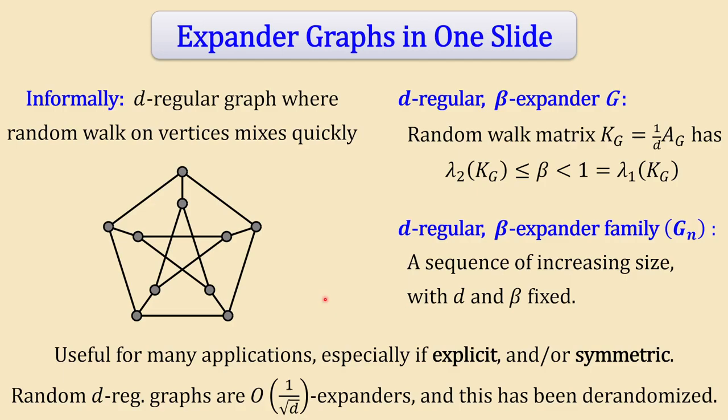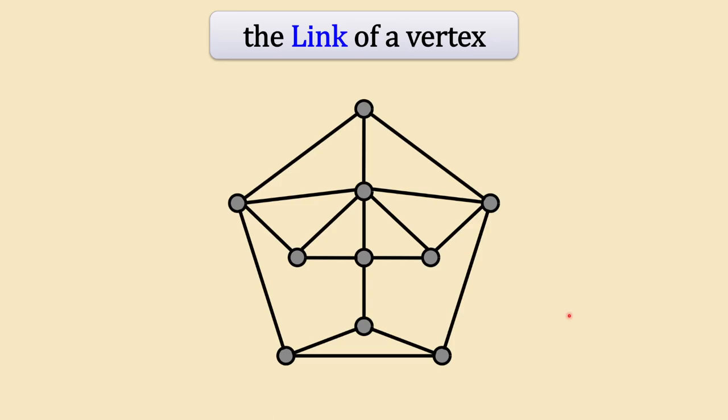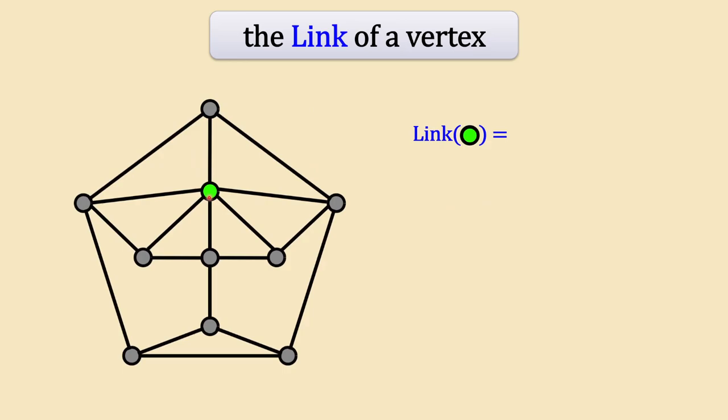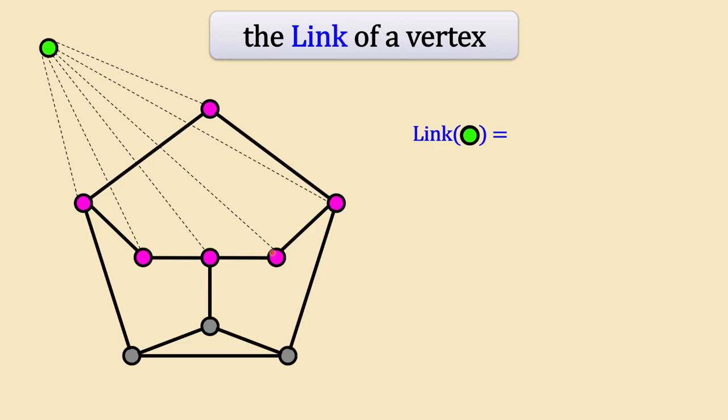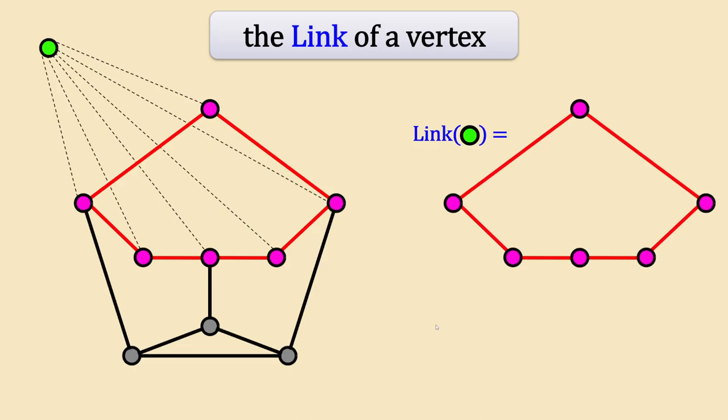To talk about high-dimensional expanders, we need the concept of the link of a vertex. Given a graph, you take a vertex — say a green vertex — and imagine picking it up into the sky, remembering which vertices it's connected to. Those neighboring vertices form the link. For example, if the green vertex is connected to six pink vertices that form a cycle of length six, then its link is a six-cycle.